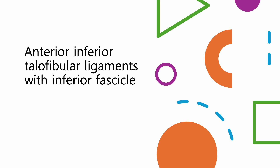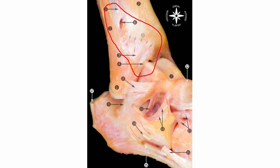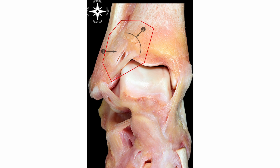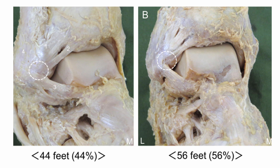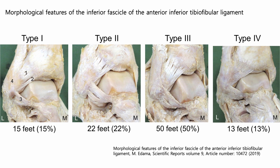Lateral ankle. Anterior inferior talofibular ligament with inferior fascicle. This ligament spans obliquely from the lateral tibia's anterior region to the medial fibula's anterior part at their distal ends, effectively bridging the lower portions of these two bones. Integral to the anterior inferior talofibular ligament is its inferior fascicle, composed of thinner, elongated extensions that provide additional reinforcement. These fascicles enhance the primary function of the anterior inferior talofibular ligament by further securing the tibiofibular syndesmosis. The anterior inferior talofibular ligament and its inferior fascicles stabilize the distal tibiofibular joint. Please observe the normal variation of the anterior inferior talofibular ligament and inferior fascicles.